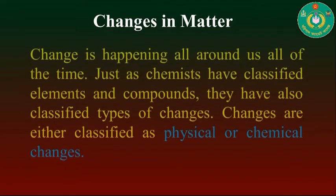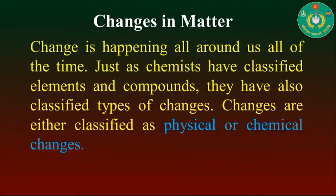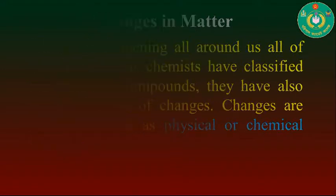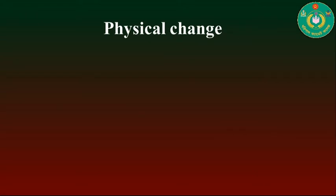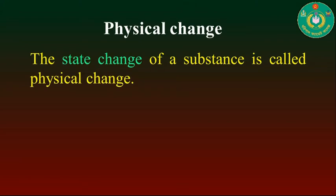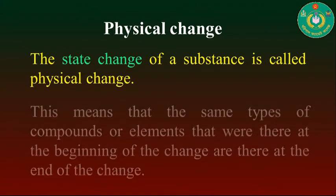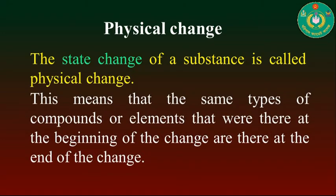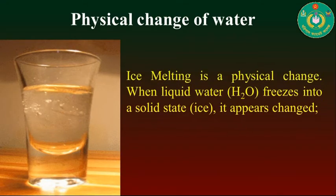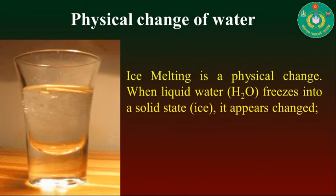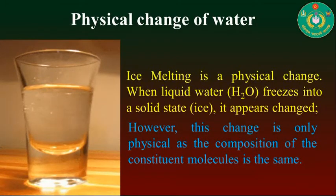Now, changes in matter: every matter can be classified into two changes — physical or chemical changes. The state change of a substance is called a physical change, meaning the chemical composition before and after changing remains the same. For example, when liquid water freezes into a solid state, it undergoes a physical change. This change is only physical as the composition remains the same before and after.